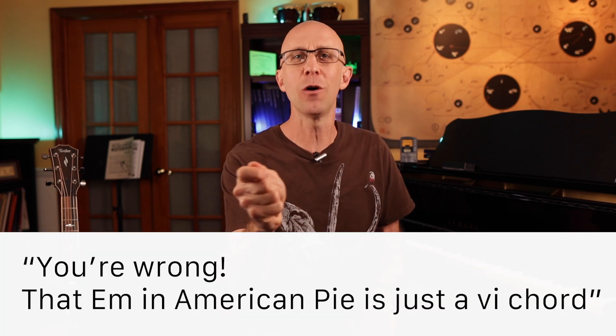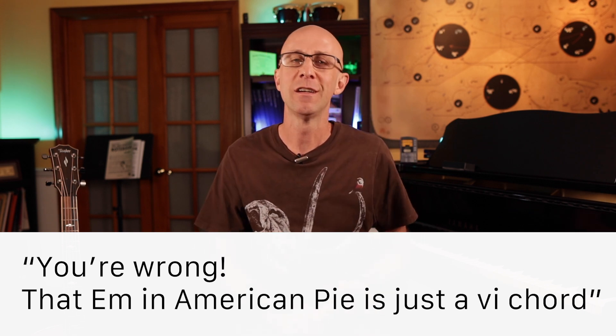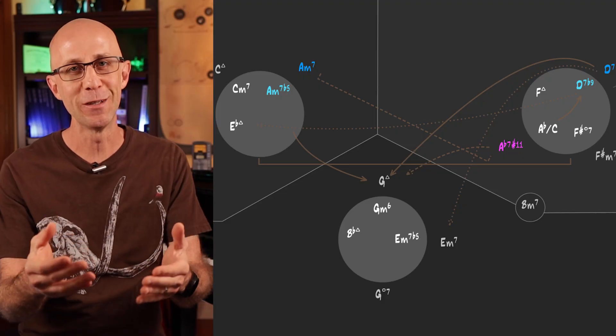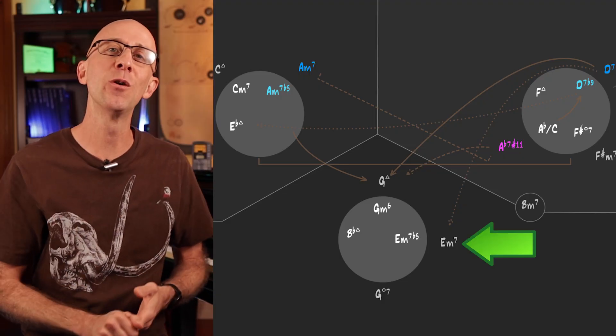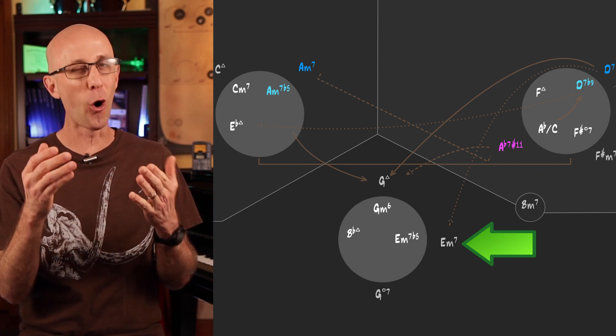So I was reading this comment on our Facebook page: 'You're wrong that E minor in American Pie is just a 6 chord. So wait, what, the 2 of 5 doesn't exist?'